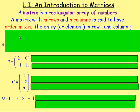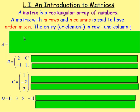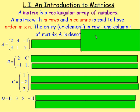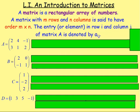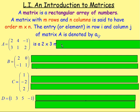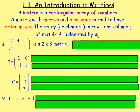The entry or element in row I and column J of matrix A is denoted by AIJ. For example, this matrix here, matrix A — what is the order of that? Well, you can see there are two rows and three columns running up and down. The rows always come first, so that would be a two by three matrix.